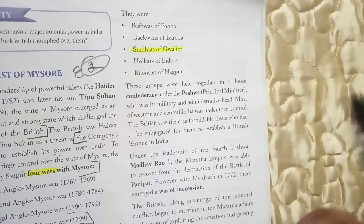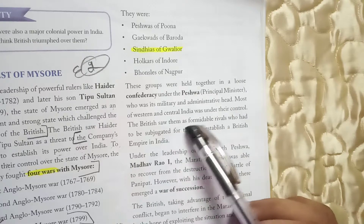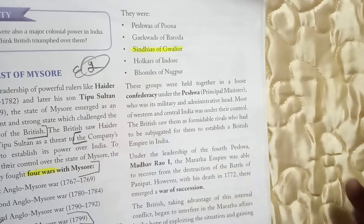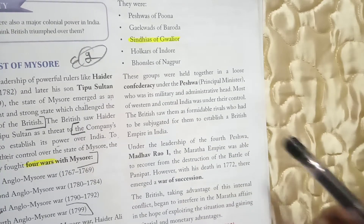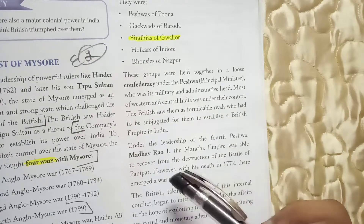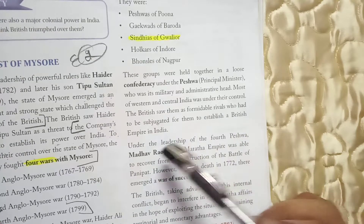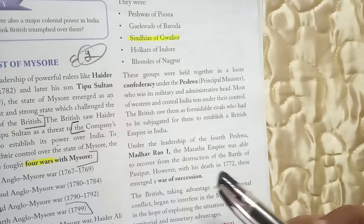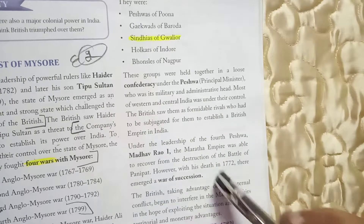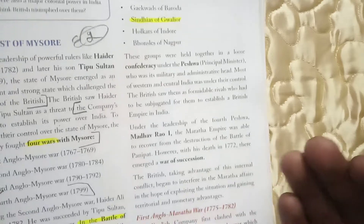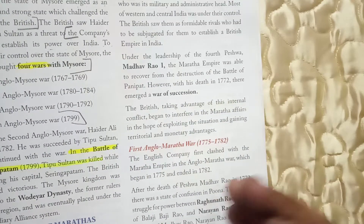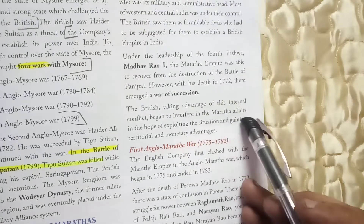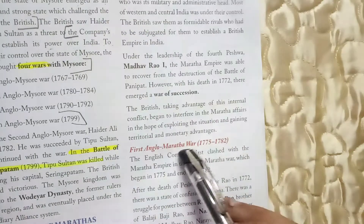Most of western and central India was under Maratha control. The British saw them as formidable rivals to establishing a British empire in India. Under the leadership of the fourth Peshwa Madhav Rao, the Maratha empire was able to recover from the destruction of the Battle of Panipat. However, after his death, a war of succession began, and the British took this opportunity to interfere in Maratha affairs, hoping to exploit the situation and gain territory and military advantage.